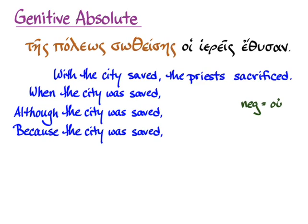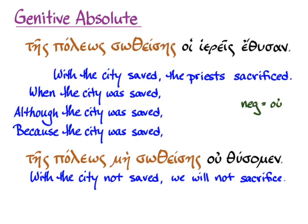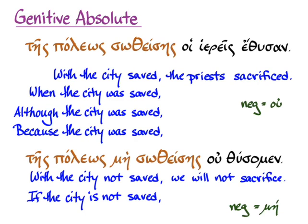There is one translation of circumstantial participles that would take 'me' as a negative, and that's if it were a conditional participle. Almost the same participial phrase: 'with the city not being saved, we will not sacrifice.' That is the same as saying 'if the city is not saved, we will not sacrifice.' You know it's the conditional version because of the negative 'me.' You don't have to have a negative to know that it's a conditional circumstantial participle, but if you do, you know for sure, because that's the only kind that takes 'me.'